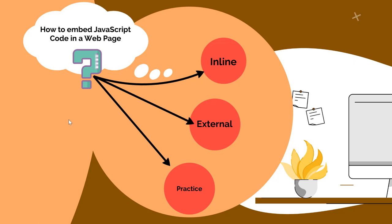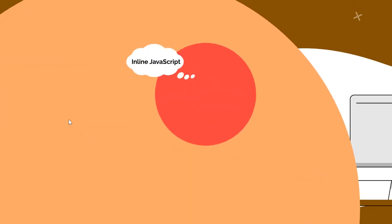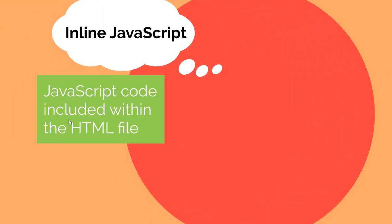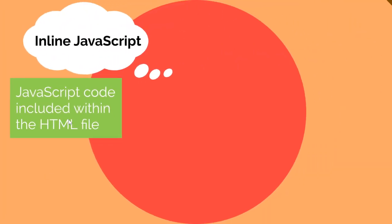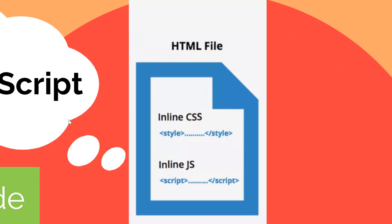Now let us know how to embed JavaScript code in a web page. There are two ways: one is called inline embedding and another is called external. In inline JavaScript code, the JavaScript code is included within the HTML file — we embed the code within the HTML code using script tags. All the code is written within these script tags.